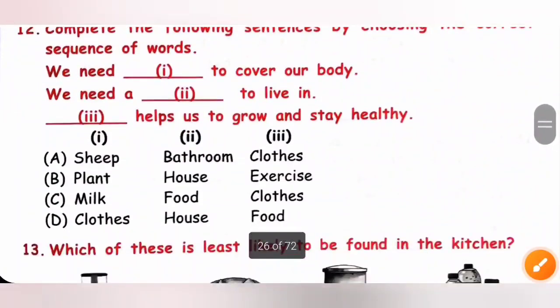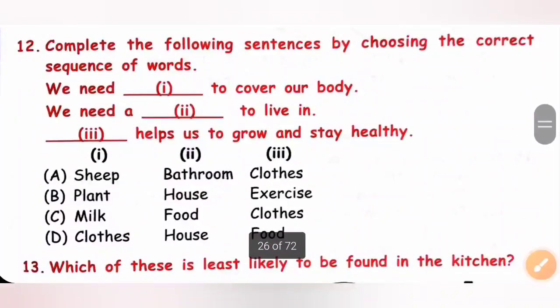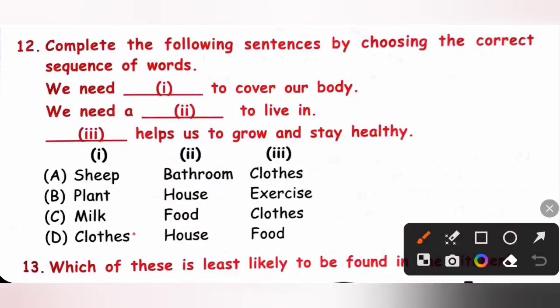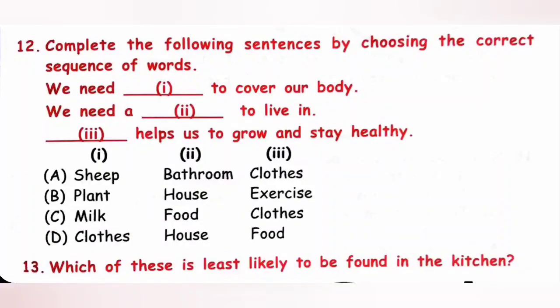Twelfth one. Complete the following sentences by choosing the correct sequence of words. We need dash to cover our body. We need clothes to cover our body. We need house to live in. Food helps us to grow and stay healthy. So, option D is the correct answer.